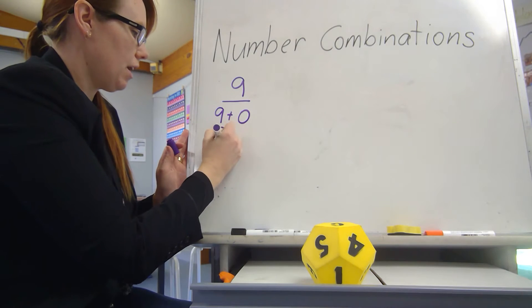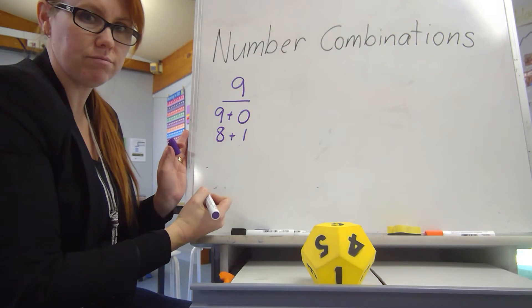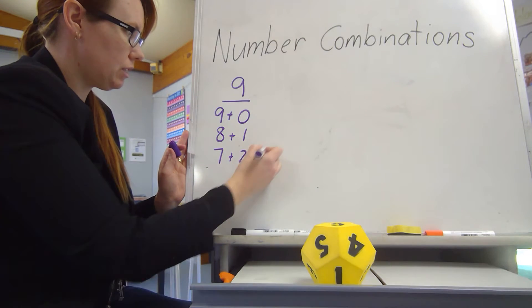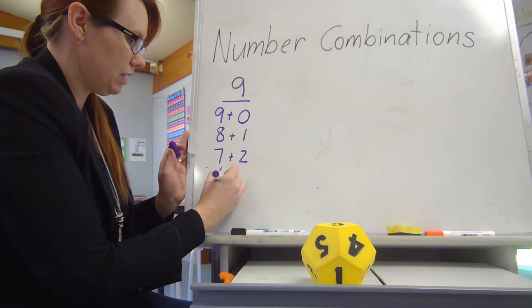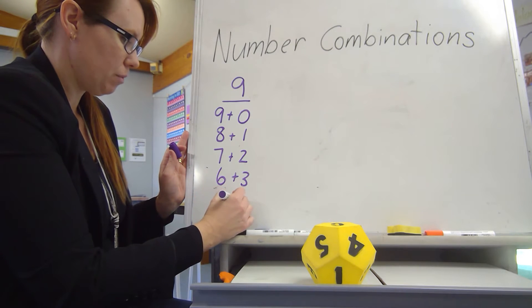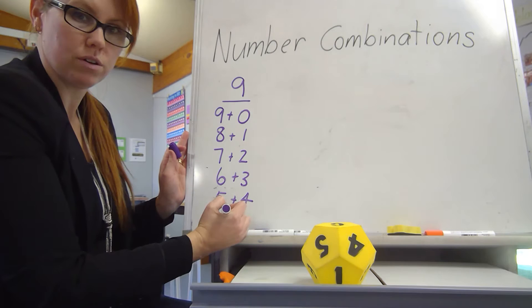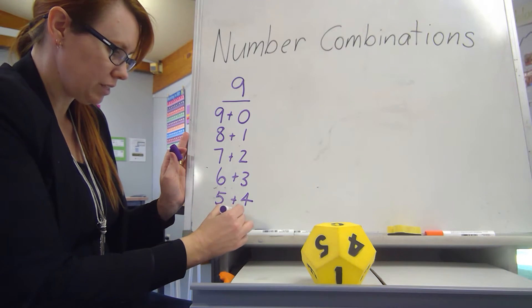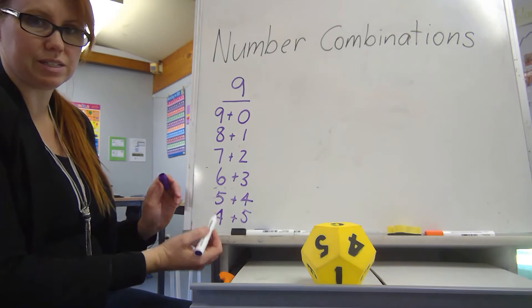9 and nothing is 9. 8 plus 1, 7 plus 2, this equals 9, 6 plus 3, 5 plus 4, I can keep going, 4 plus 5. And this is where you start to see the pattern.